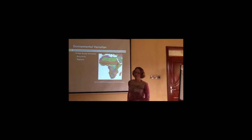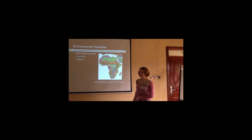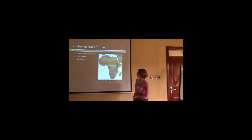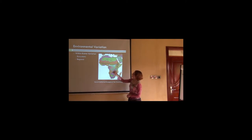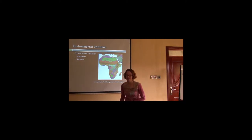If you zoom in a little bit, the next level are ecosystems. This is an example of different ecosystems across Africa according to the World Wildlife Fund. You can see that if you're zooming into this desert region, there are actually quite a few different ecosystems going on in this area.